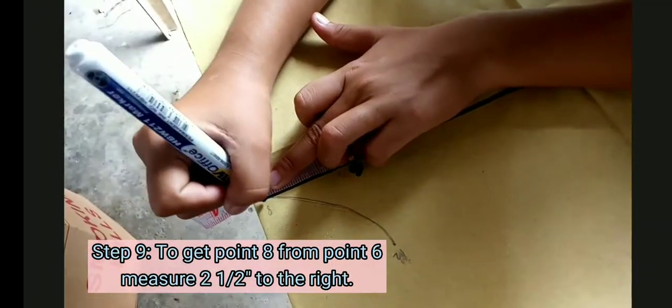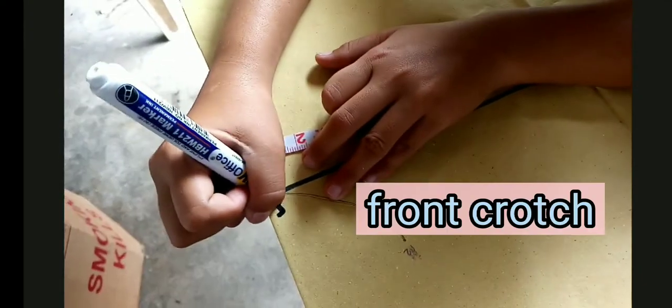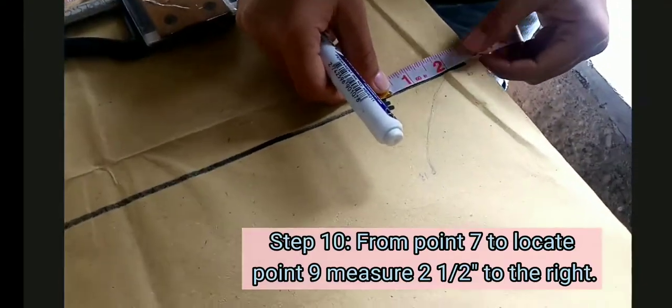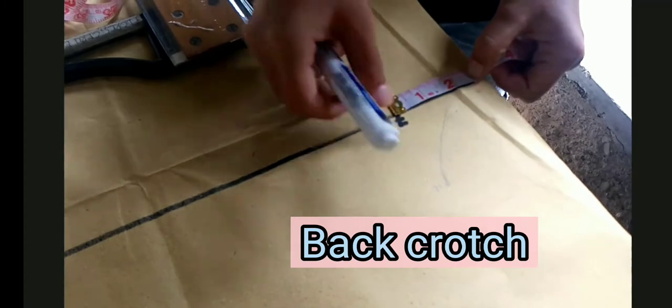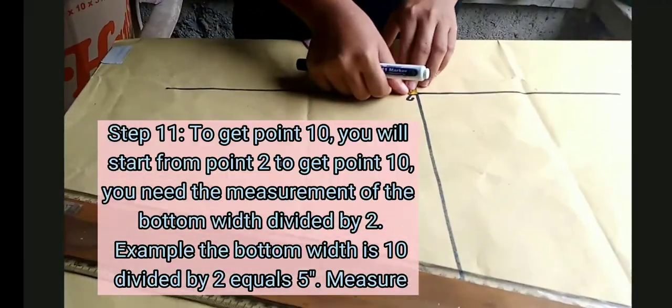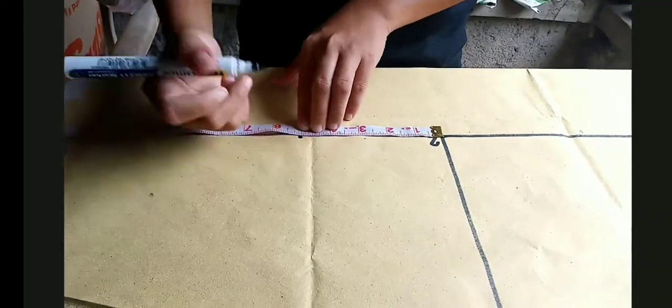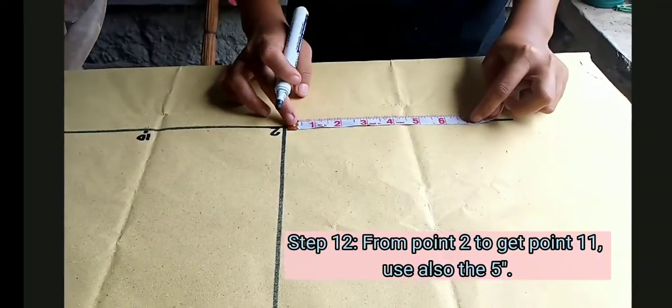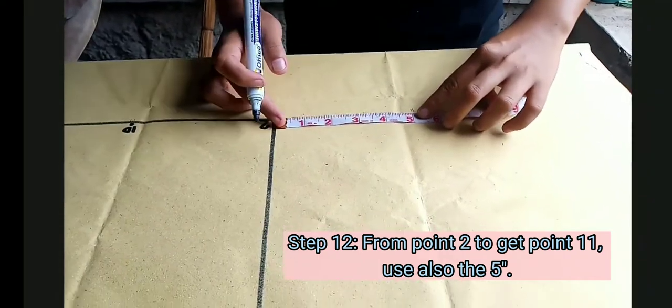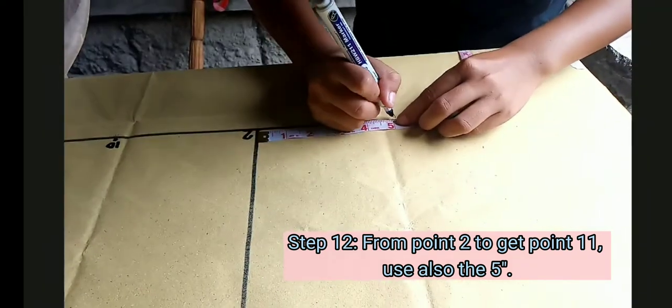Measure 2 and 1 half to the right to get point 8, that is the front crotch. It also measures 2 and 1 half to the right to get the back crotch. To get point 10, you will start from point 2. You need the measurement of bottom width. It measures 5 inches.